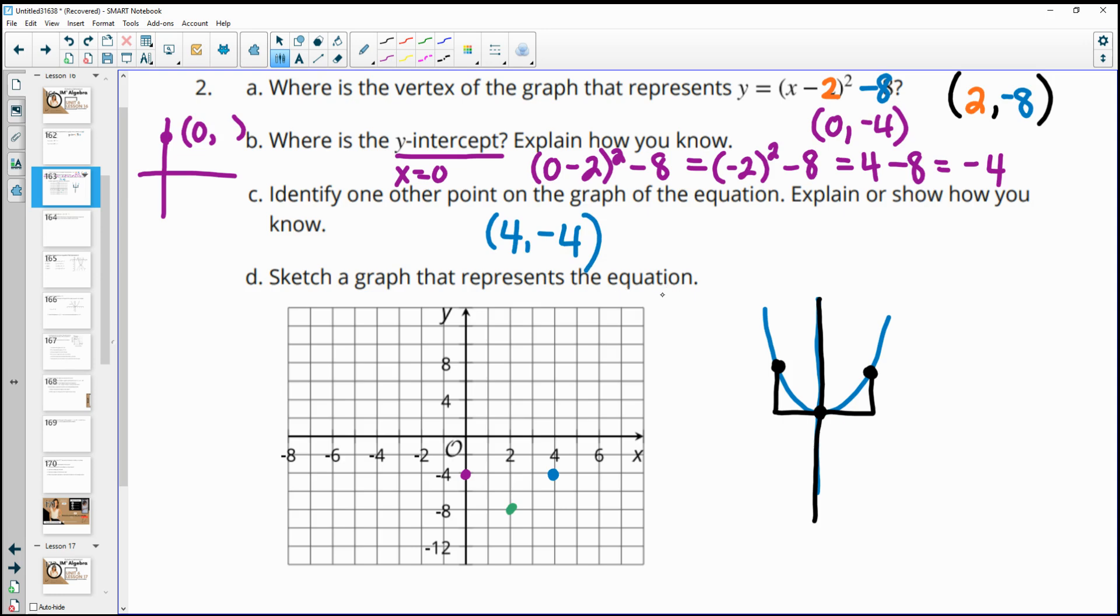So that's one way you can do it, OK, is we know it's going to be symmetrical around the vertex. Another thing you can do is just plug in any value you want into this equation, right? So you could have plugged in anything you felt like because it just says give one other value. So if you wanted to go ahead and plug in 1, you could, right?